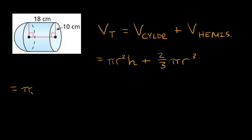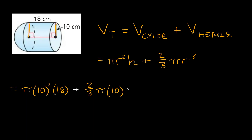Let's plug in numbers. The radius of the cylinder is given as 10, so we have pi times 10 squared. The height of the cylinder — the total length from one end to the other — is 18 centimeters. Then we add two-thirds times pi times the radius cubed. The radius for the hemisphere is the same as the cylinder, 10 centimeters, so we get 10 cubed.